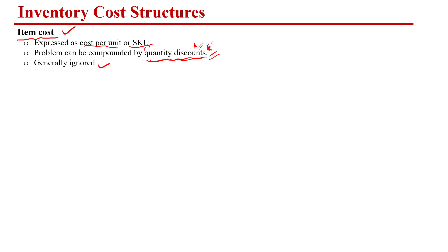For example, if the supplier gives us a product at 9 rupees per unit, but says that if you order 2000 units we will give it at 800 rupees per unit, or 700 rupees if you order more than 3000 — this is the quantity discount, in which this particular cost factor plays a role. But generally, we can ignore it if the supplier is not providing a quantity discount.